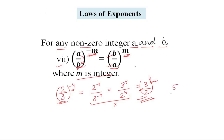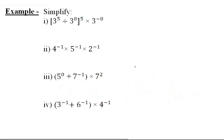Next example: whole raise to the power negative 2 gives 4 upon 5 whole raise to the power 2. So let's see the questions. The example is to simplify.